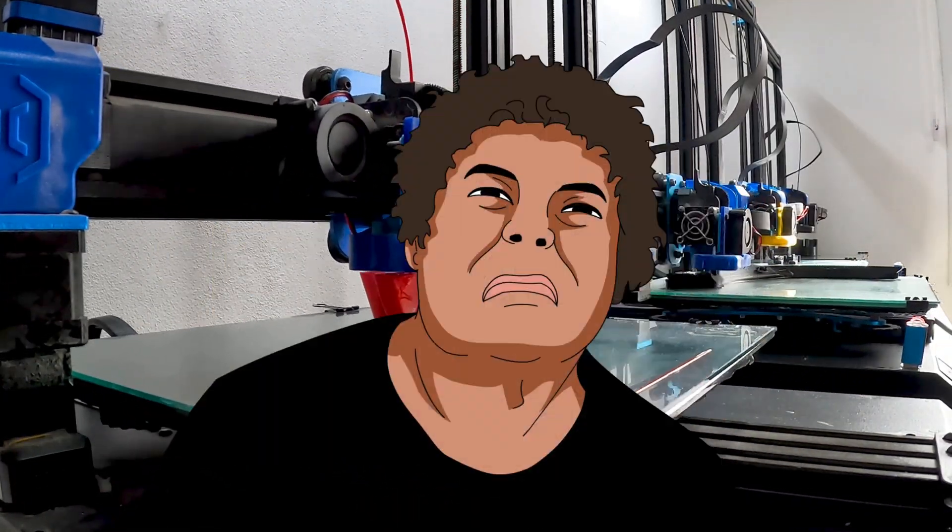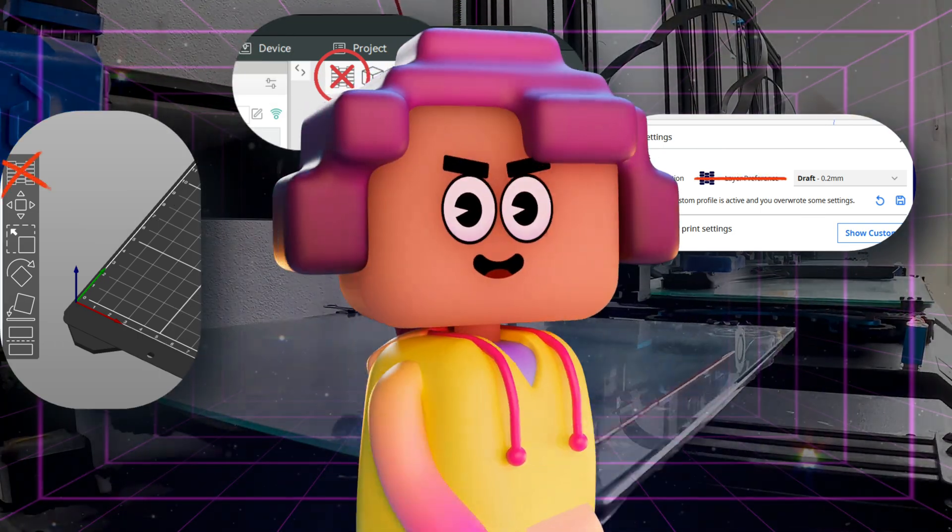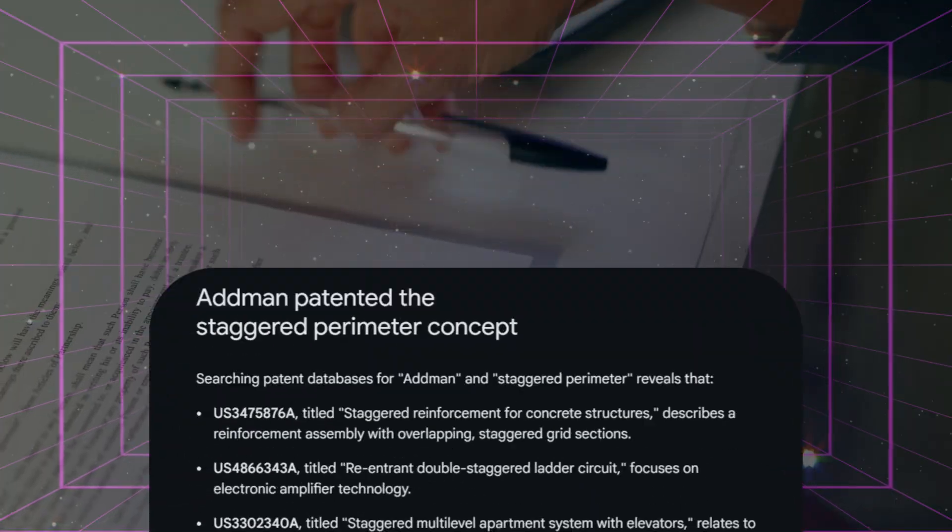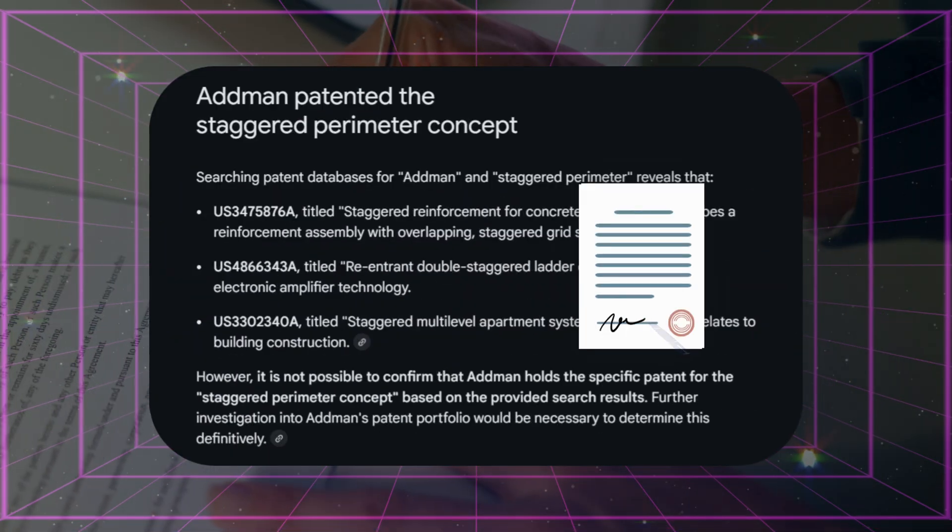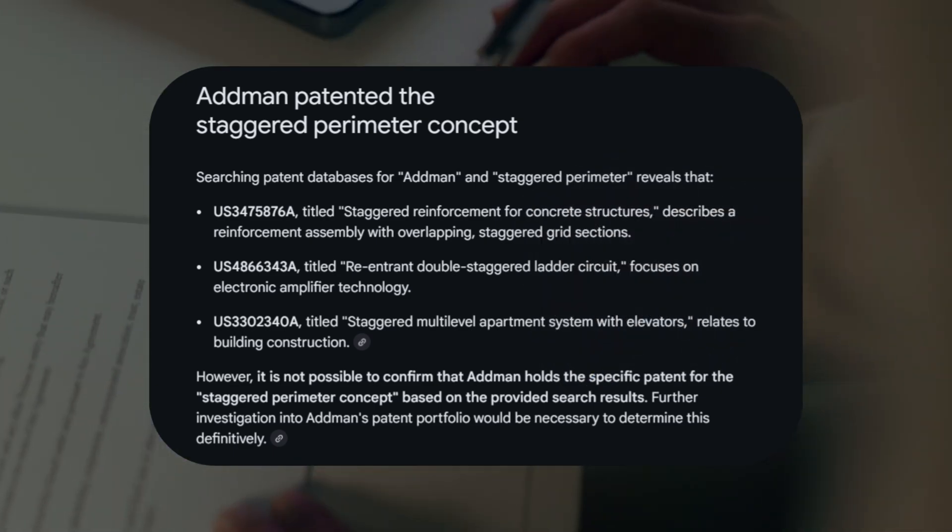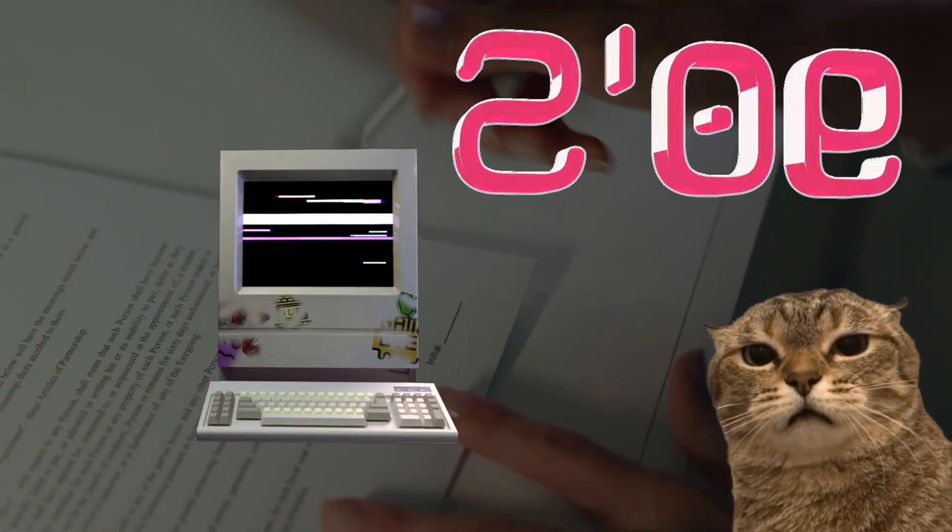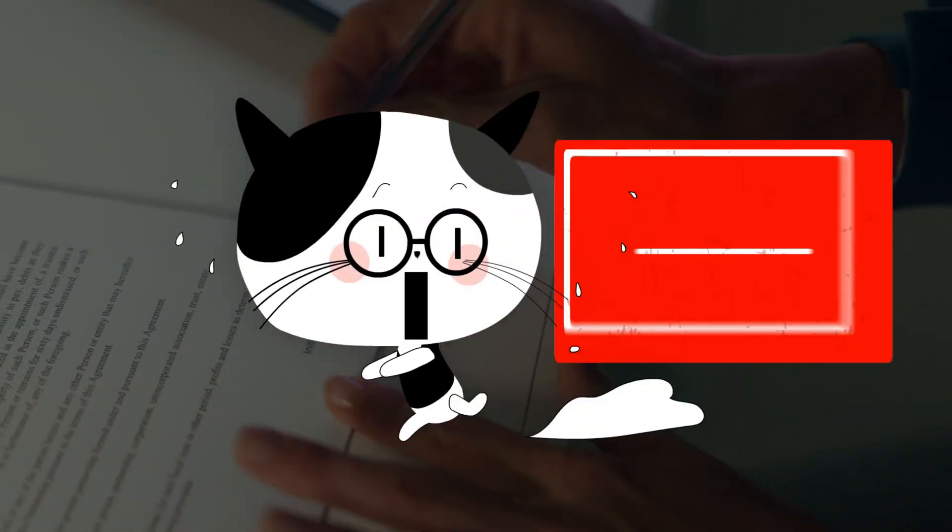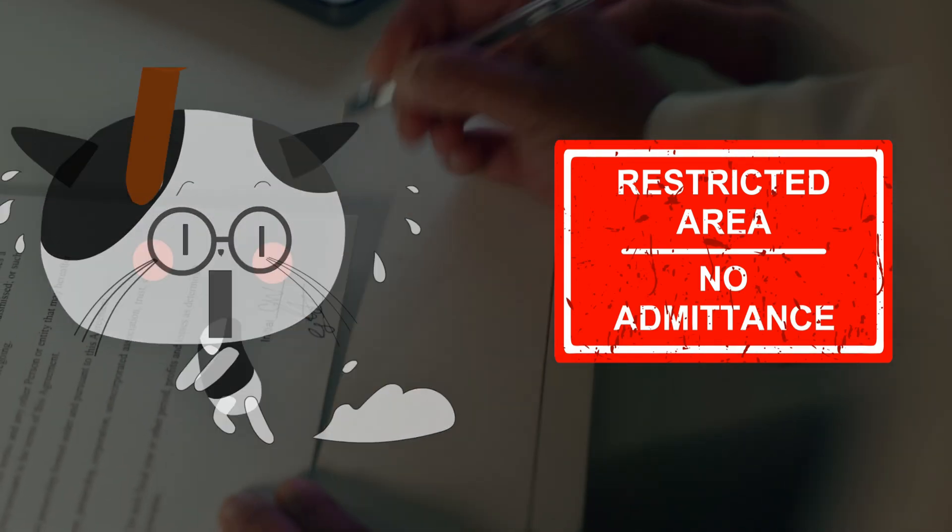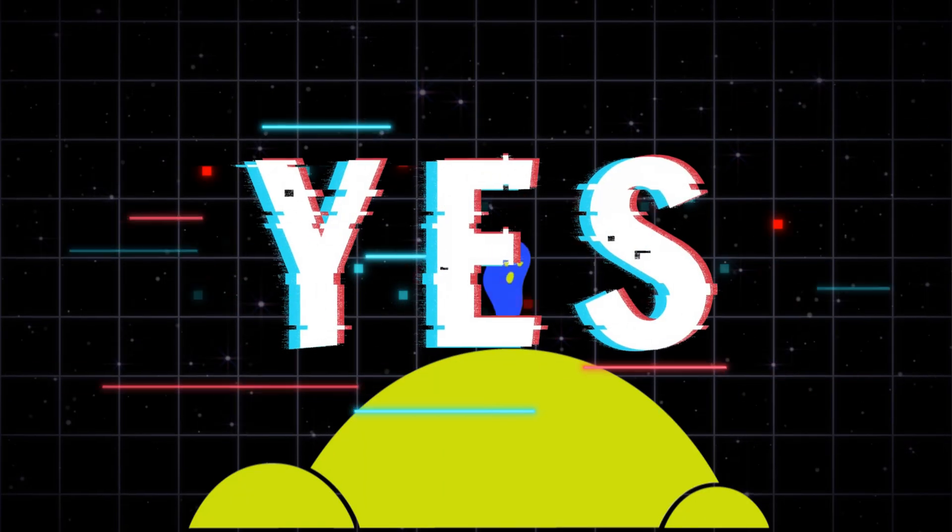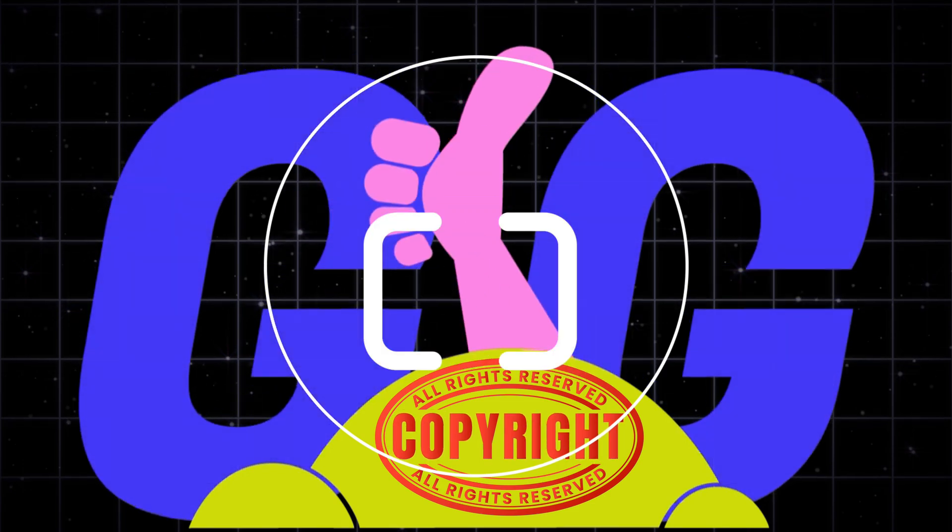So, why isn't it in your slicer? Here's the twist. In 2020, a company called Adman patented the concept, even though a similar idea was published way back in the 90s. Now, slicer developers avoid including it to dodge legal risks. Yes, it works. But it's locked behind a patent.